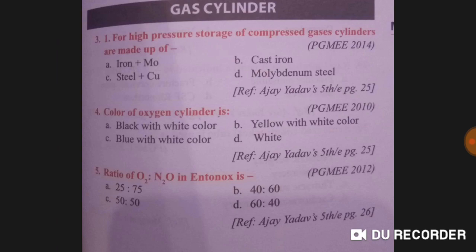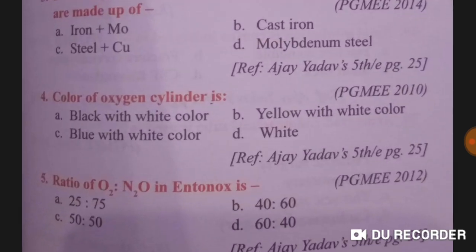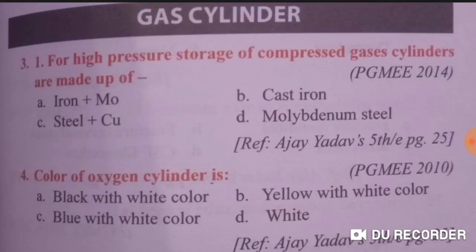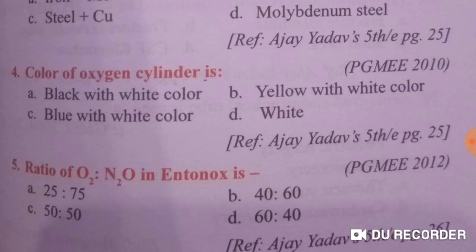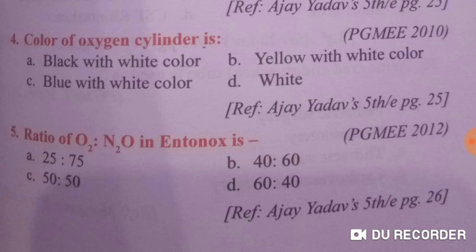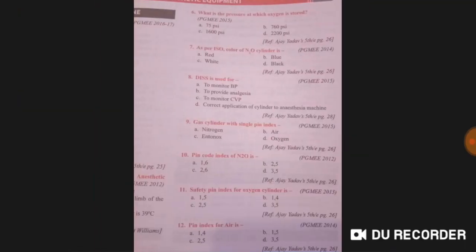Now gas cylinders MCQs. For high-pressure storage of compressed gases, cylinders are mainly made up of molybdenum steel. The color of the oxygen cylinder is black body and white shoulder — option A is right. The ratio of oxygen to nitrous oxide in Entonox is 50:50 — option B is right.